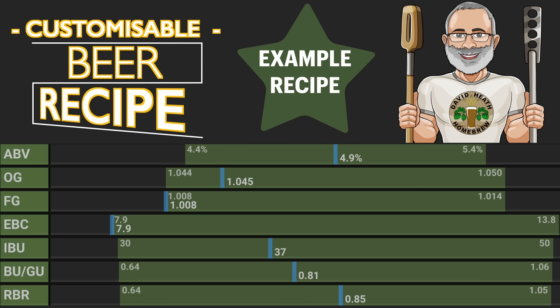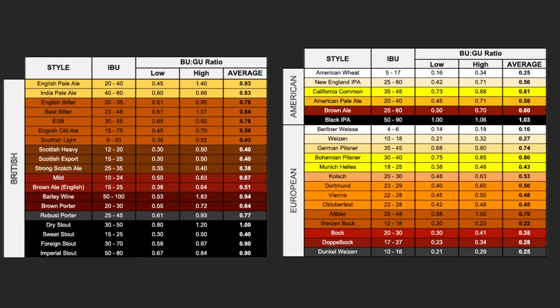I strongly suggest that you stick to these same levels for at least a while when using this recipe template for learning and discovery before making changes, and when you do make a change keep it to one change, despite the temptation to change more, as this really is the best route to learning. For further information check online and you will be able to find BUGU range charts like these that I'm showing on screen now. Naturally all of this information is within Brewfather and some other beer recipe software, but it can be interesting and educational to see this kind of information in one place.